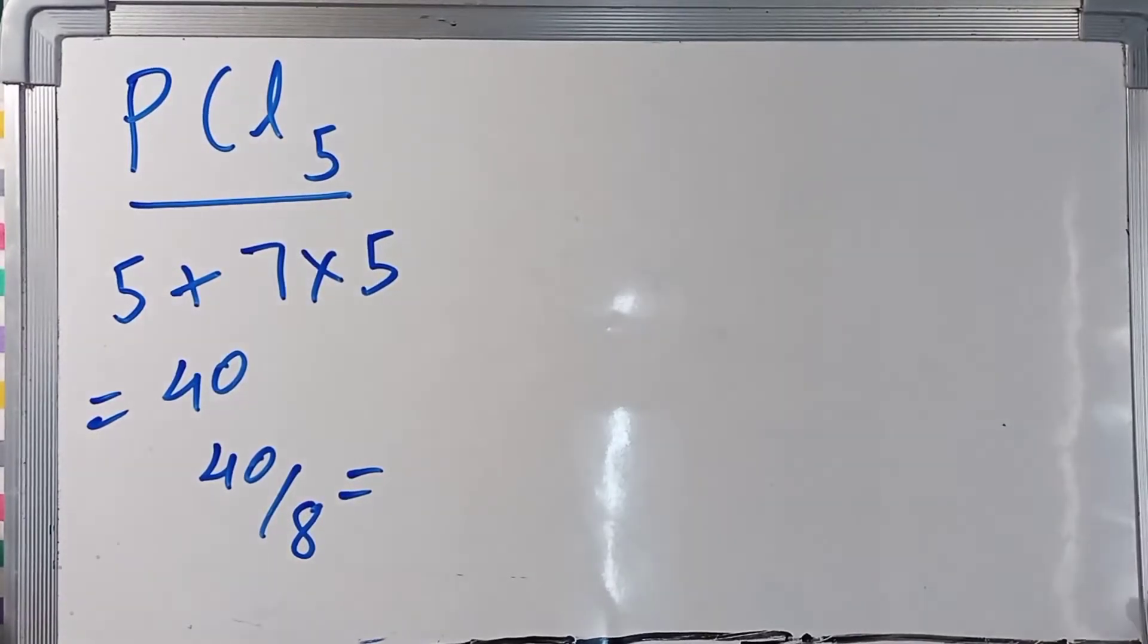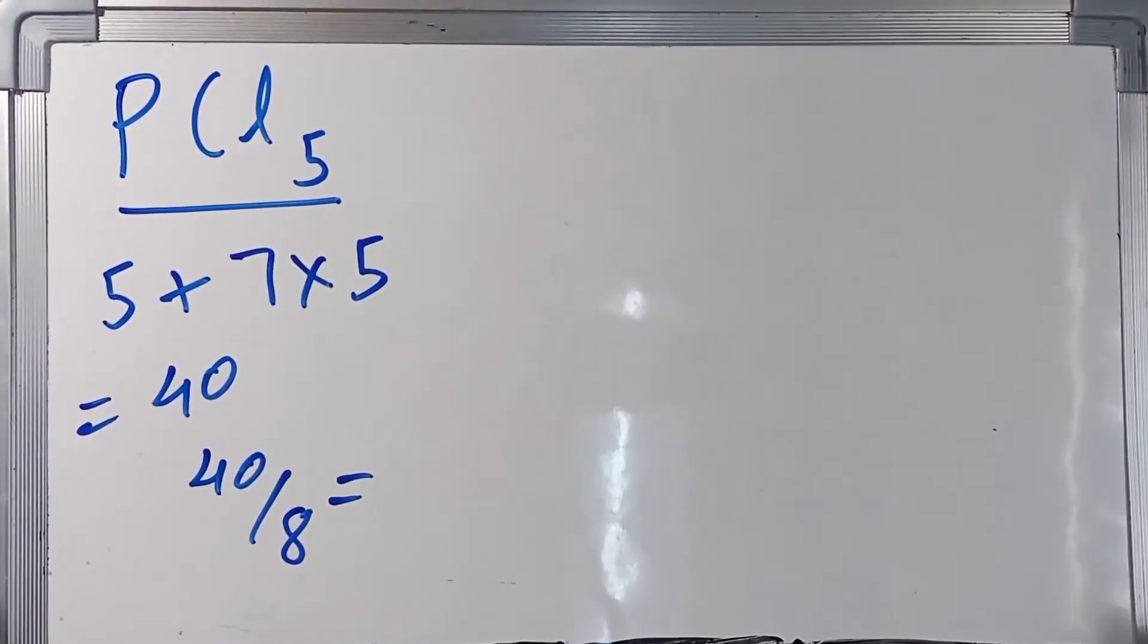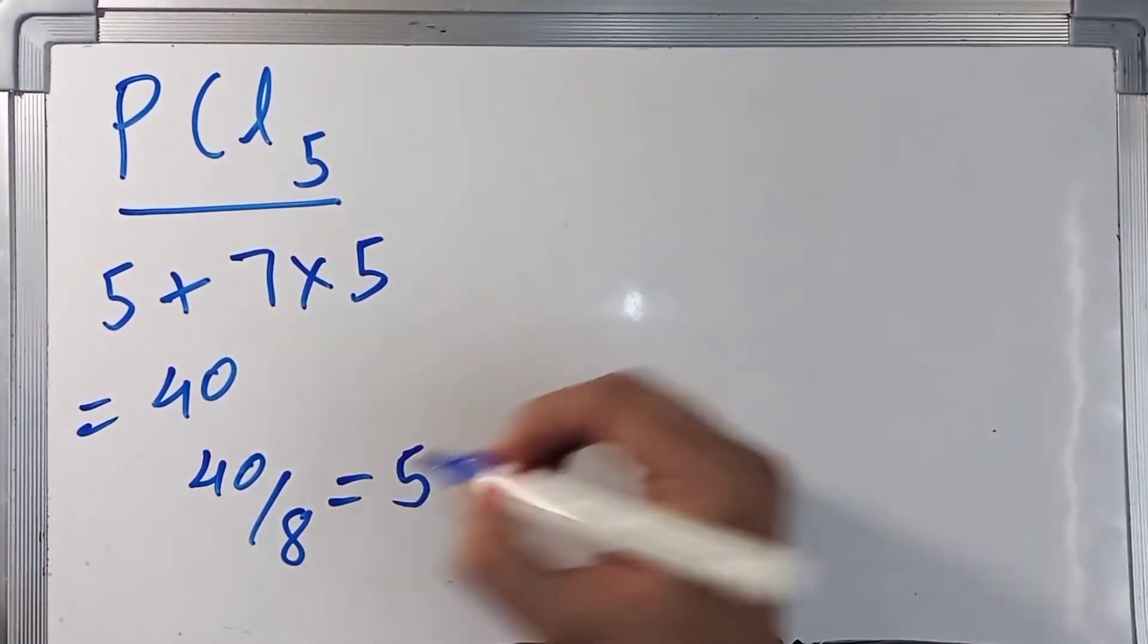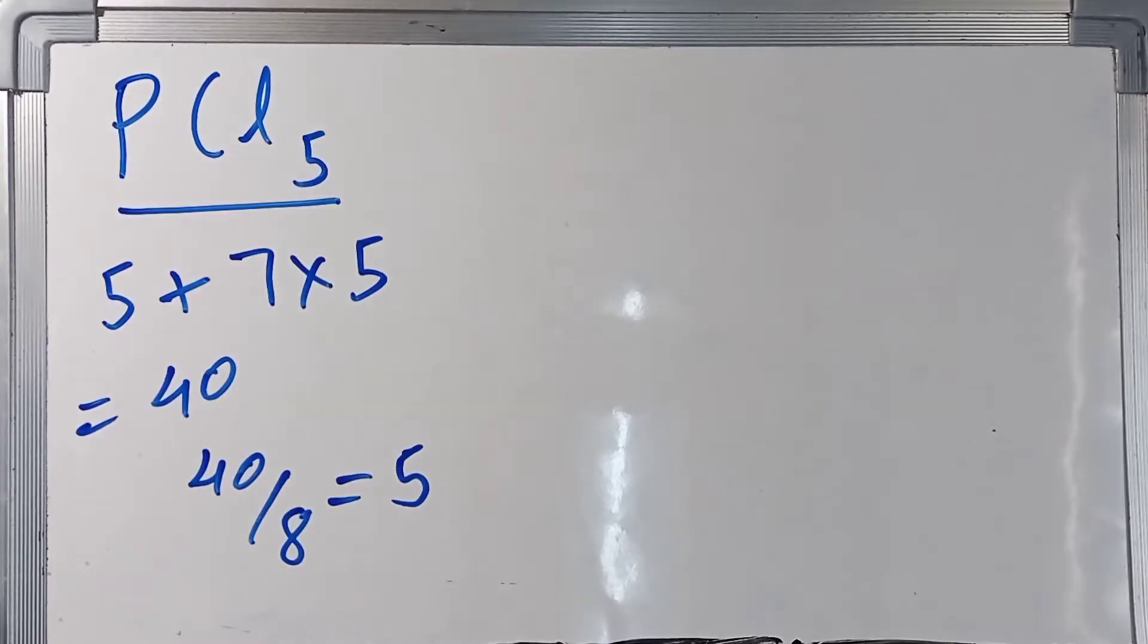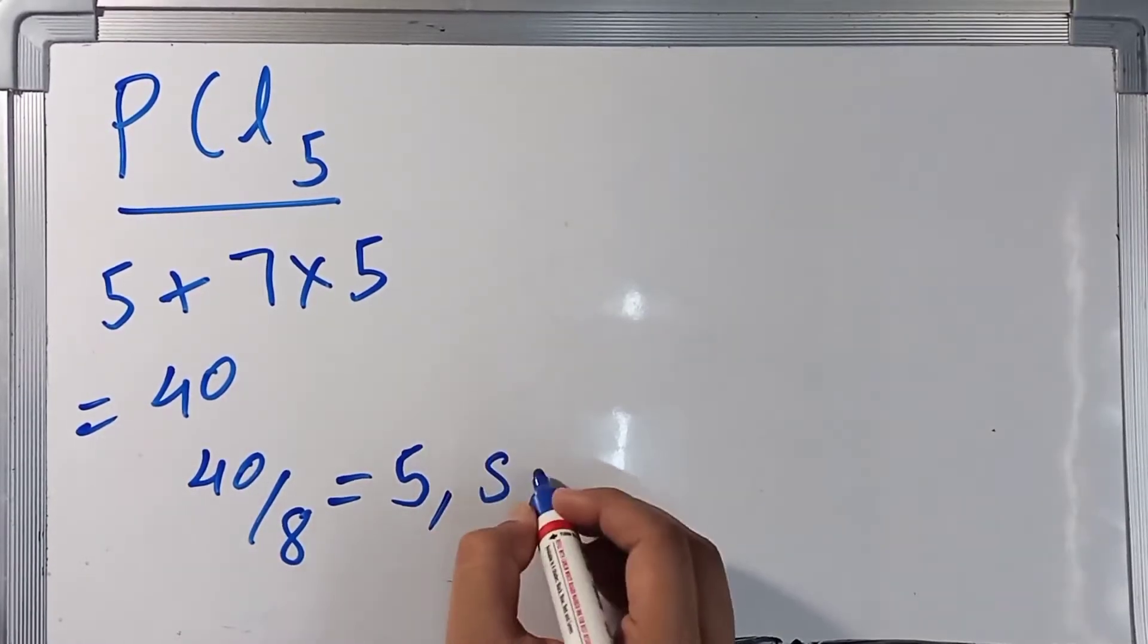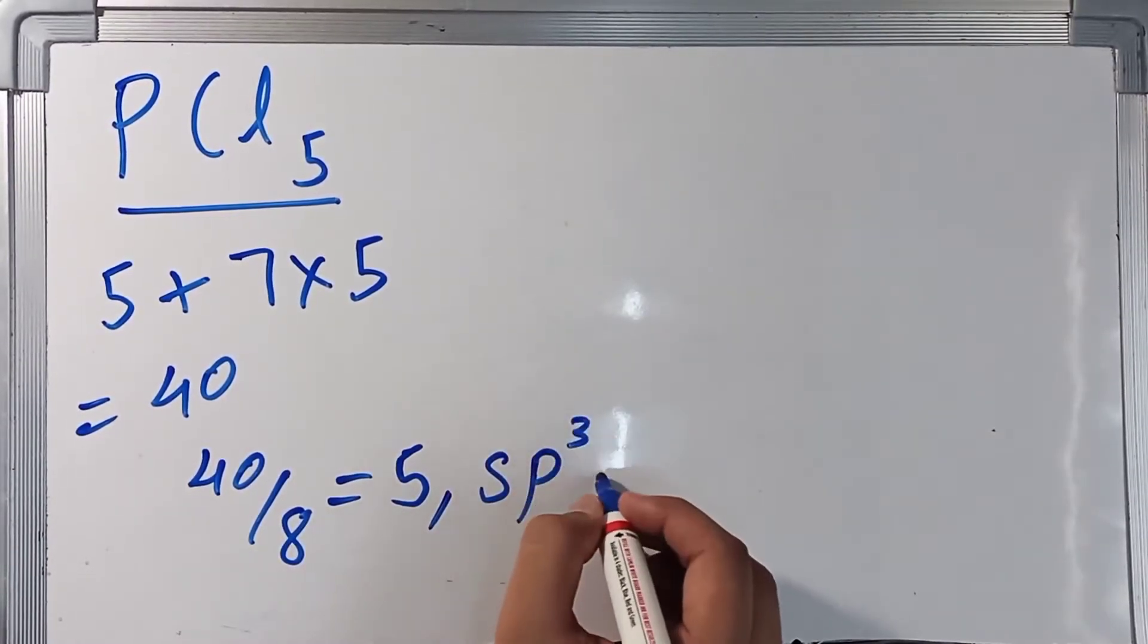So 40 by 8 is equal to 5. This 5 corresponds to sp3d hybridization.